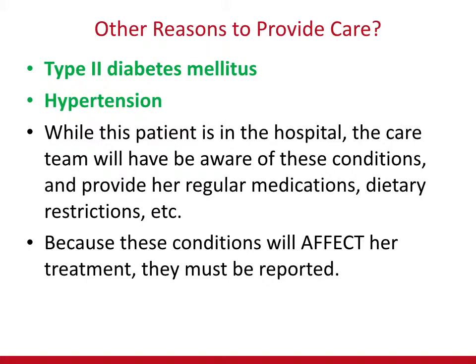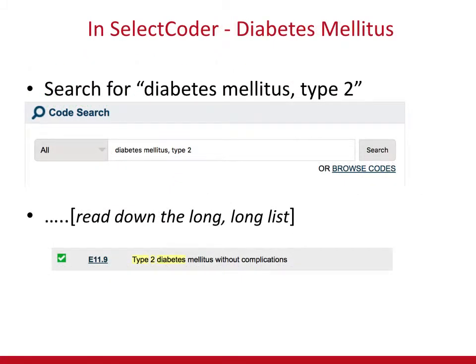Let's get into Select Coder. Start with diabetes mellitus type 2 — type that into the search bar and click search. Can you believe how many codes there are to report diabetes mellitus type 2? As a professional, it is your responsibility to read that entire list and look for what matches the information you have. We're going to get to E11.9, which is type 2 diabetes mellitus without complications. Why? Because the doctor didn't say anything about Rhonda's infarction having any relation to her diabetes, and it is not a known direct manifestation of diabetes — so there is no complication documented.